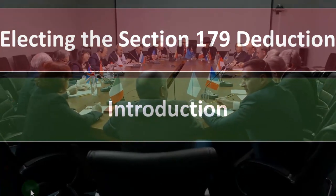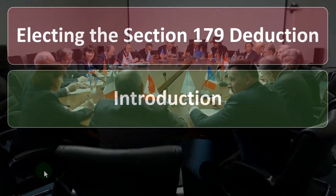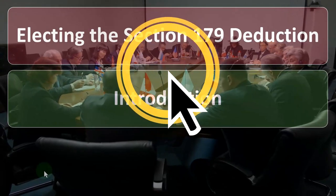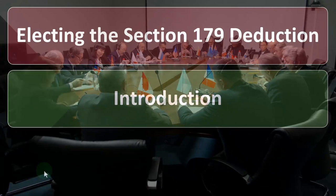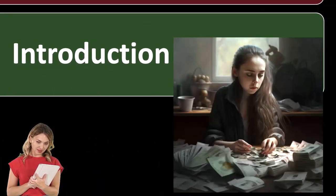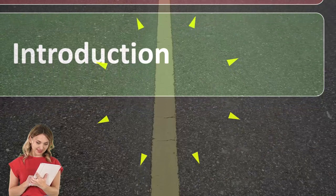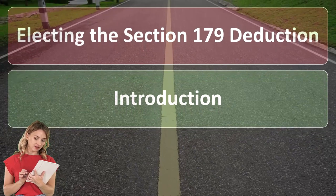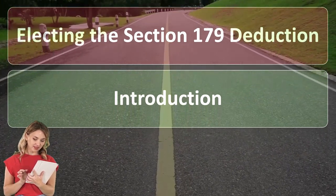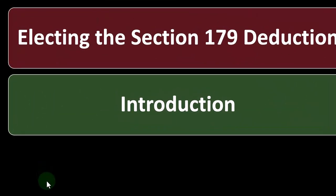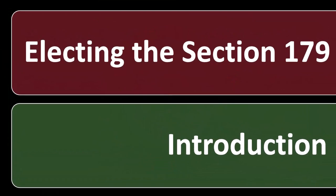That brings us to electing the Section 179 deduction. For depreciation generally, you're putting an asset on the books and allocating its cost over the useful life — that's the normal accounting structure. The simplest method to visualize is straight-line depreciation: an even amount allocated over the useful life of the item being depreciated, spreading the cost evenly over the time frames you're using it.